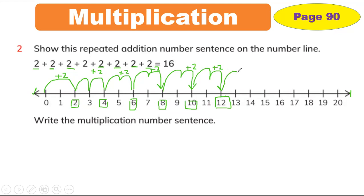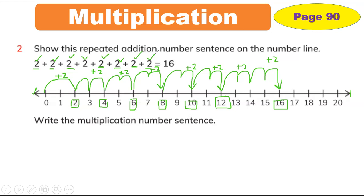Again the last number is plus 2. This is 8 times total, so we have to add one more. Plus 2. So how many times did we add 2 to get 16? 8 times: 1, 2, 3, 4, 5, 6, 7, 8. So 8 times 2 makes 16.